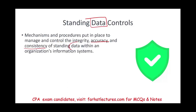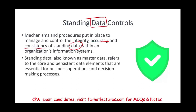What is data by itself? Data is any type of information that is collected and stored. It can take many forms — numbers, text, images, videos, any form of digital or analog representation. However, standing data, also known as master data, refers to the core and persistent data elements that are essential for business operations and decision-making processes.